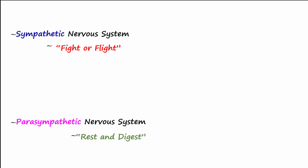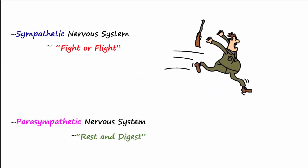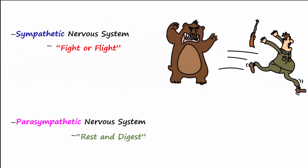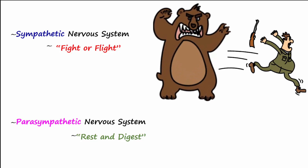The two branches of the ANS include the sympathetic nervous system and the parasympathetic nervous system. The sympathetic nervous system is very active during a fight-or-flight response, and the parasympathetic nervous system is more active during conditions of rest and digest. For example, the sympathetic nervous system would be very active if you are being chased by a bear, while the parasympathetic nervous system is more active when you are sitting on the couch relaxed.